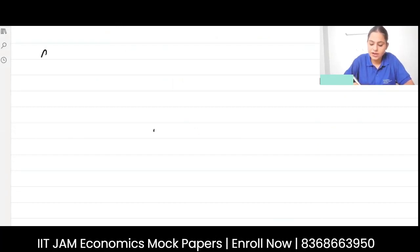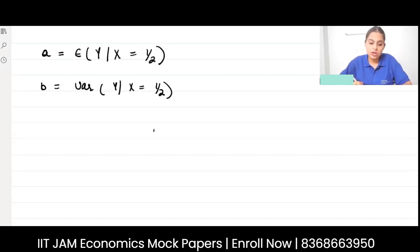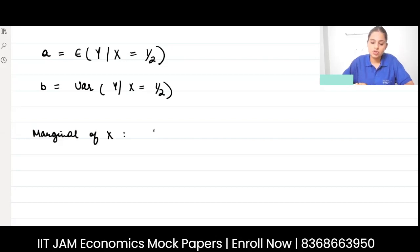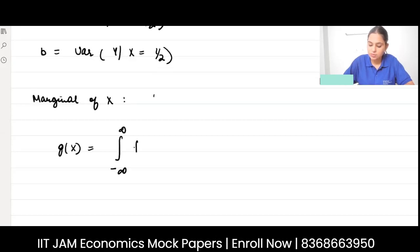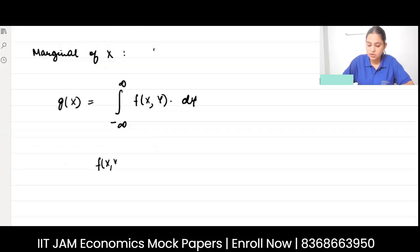I want to find A, which is the expected value of Y given X is 1/2, and B, which is the variance of Y given X is 1/2. To begin with, I must find the marginal PDF of X. Let's call it g(x), which is obtained by integrating the joint PDF over all values of y. The joint PDF was given as 2 when x is between 0 and 1.